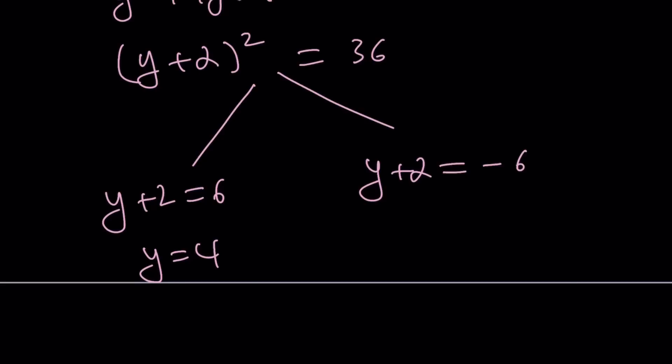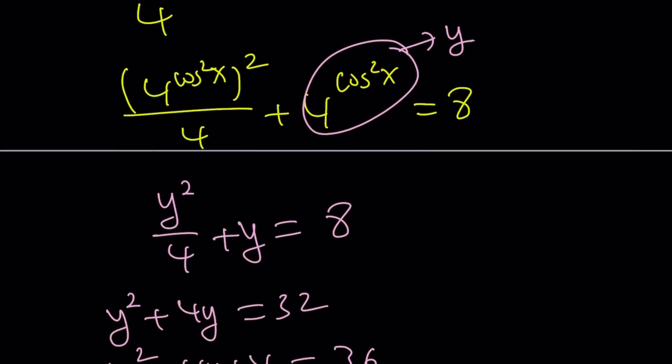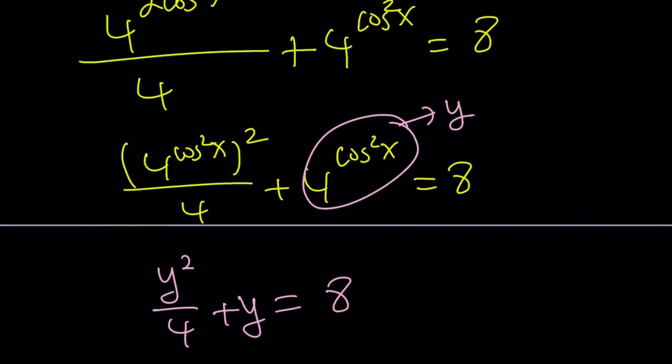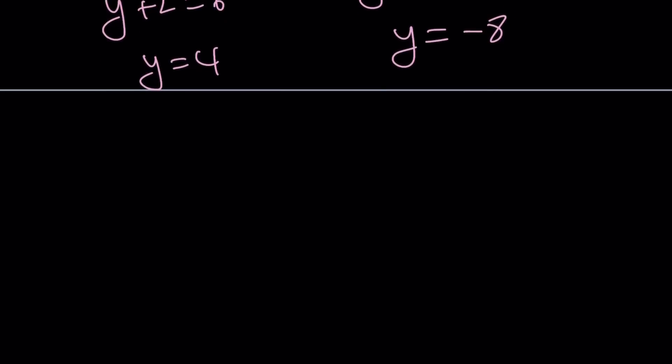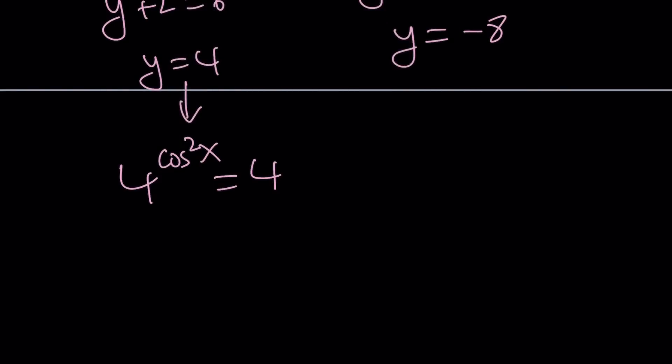From here, y is either 4 or negative 8. Let's see if these values are meaningful. Because we substituted something for y. We have to make sure that it actually works. And not undefined or unreal or whatever. What is y? y is 4 to the power cosine squared x. So that's an exponential expression. So we got to be careful. y replaced with 4 to the power cosine squared x. And set it equal to 4. And this means cosine squared x equals 1. Right? So this must be 1. Because 4 to the power 1 equals 4.